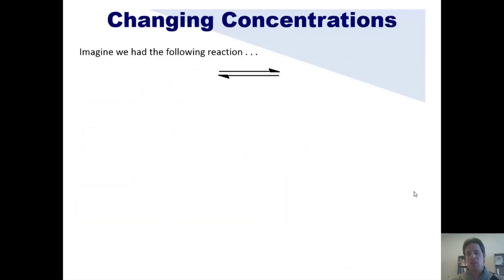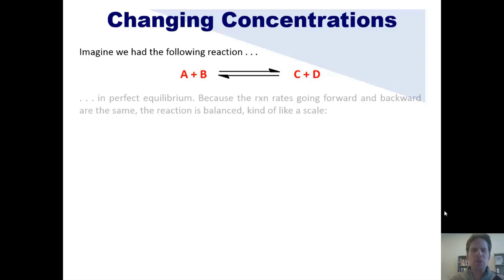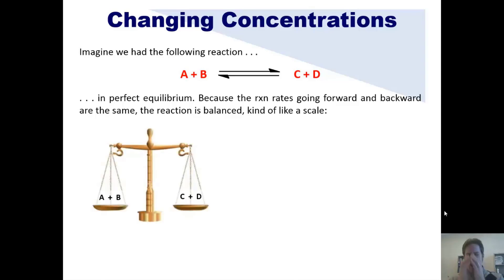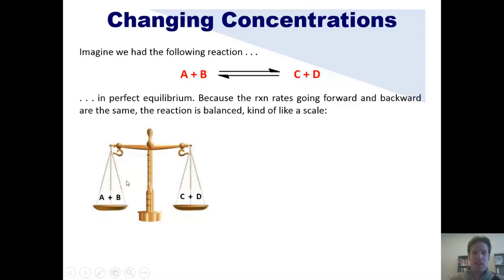We'll begin by looking at changes in concentration. Imagine that we have this reaction sitting at perfect equilibrium. Because the reaction rate going forward and backward are the same at equilibrium, the reaction could be said to be balanced, kind of like a scale. When a reaction is at equilibrium, that does not necessarily mean that the amounts of reactants and products are the same. It just means that the rate of going from left to right is the same as the rate going from right to left.